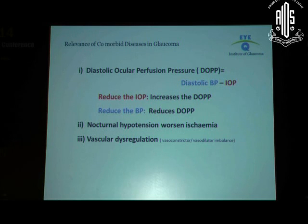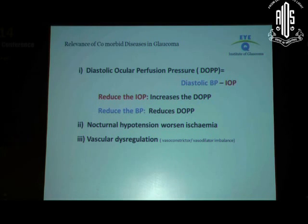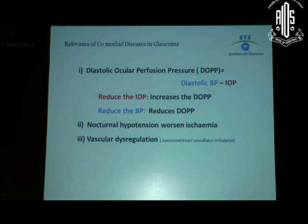What does this mean to us in the context of glaucoma? Blood supply to the eye is dependent on what is called the diastolic ocular perfusion pressure — that is, diastolic blood pressure minus the intraocular pressure. If you reduce the intraocular pressure, the perfusion pressure to the optic nerve increases. Likewise, if you reduce the blood pressure, the perfusion of the optic nerve reduces. Nocturnal hypotension worsens ischemia and decreases perfusion, and vasodilator-vasoconstrictor imbalance further worsens the ischemia.